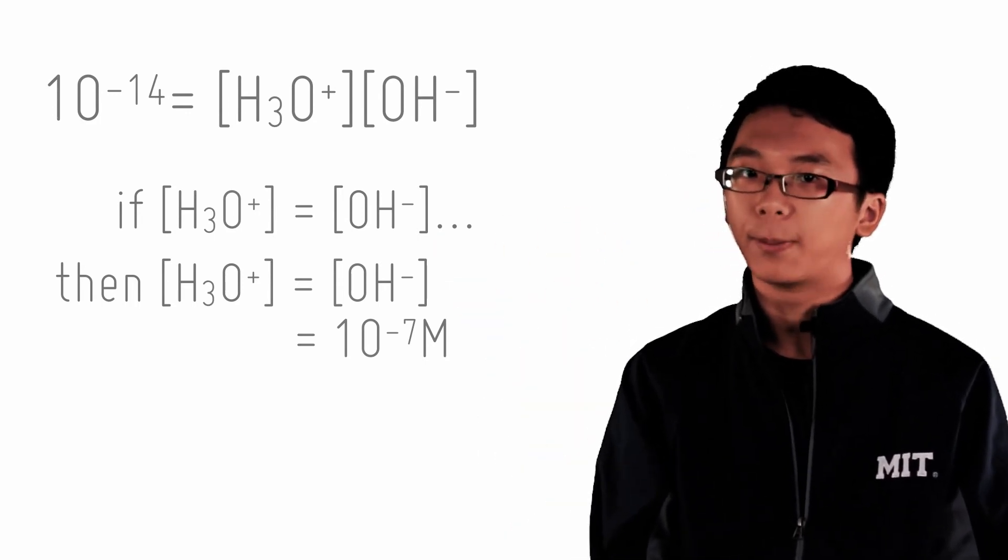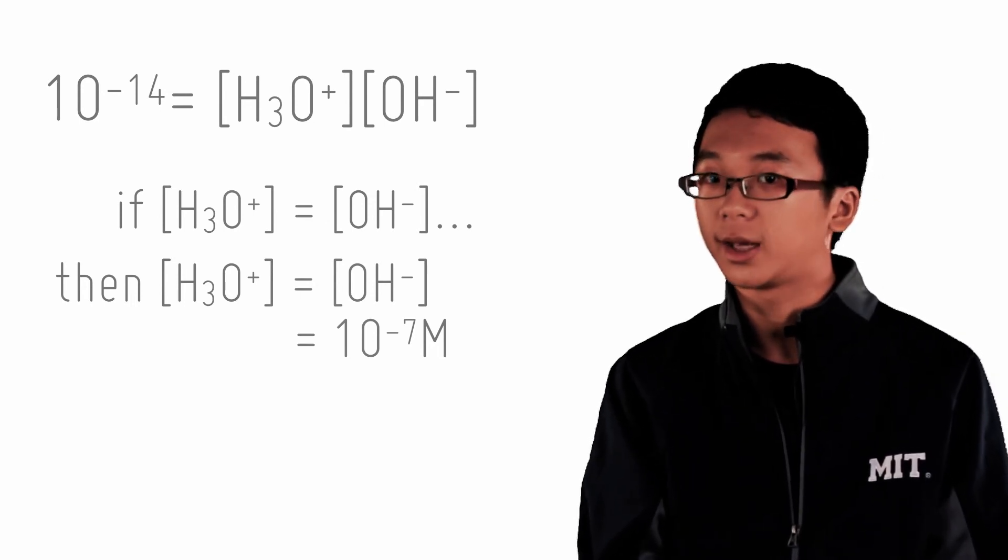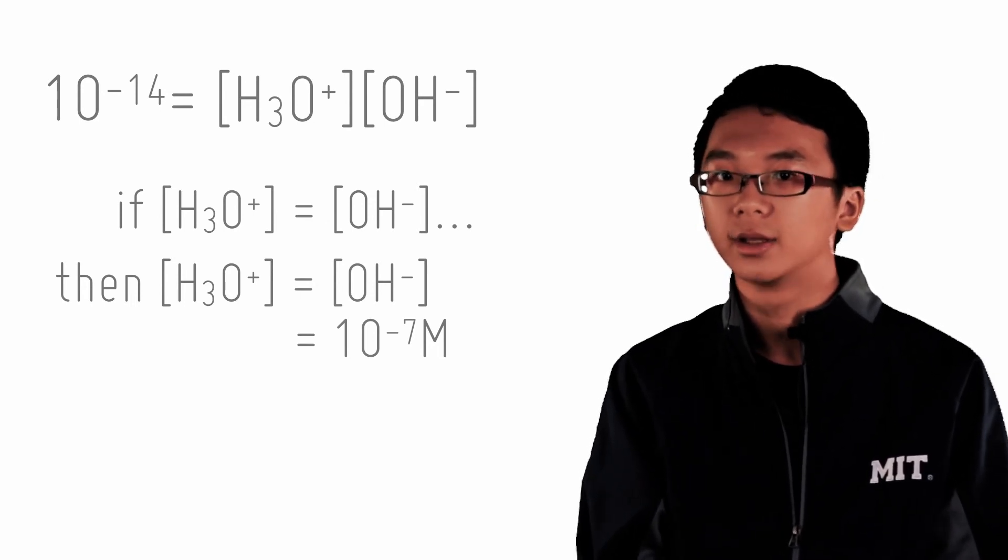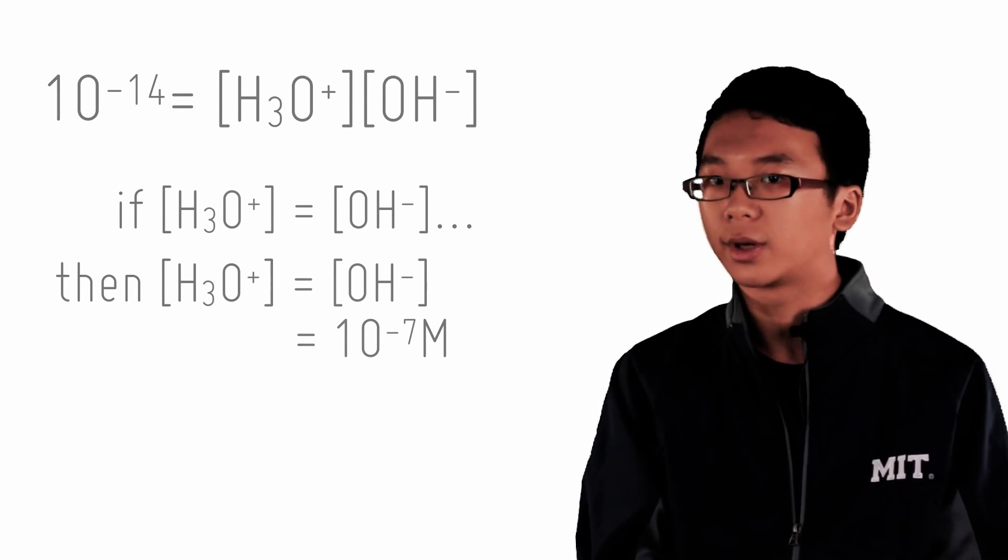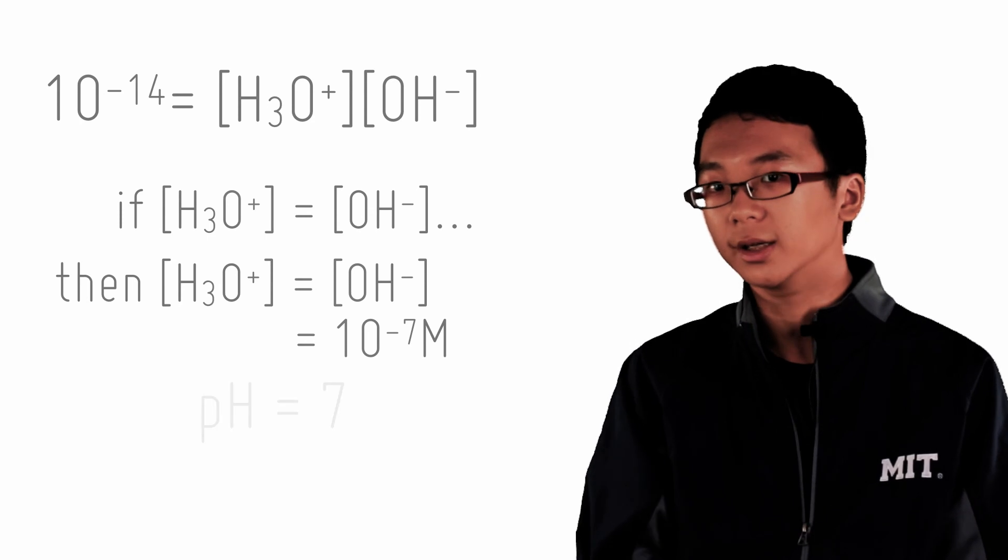In this case, that would mean that both hydronium and hydroxide will have to be in the concentration of 10 to the power of negative 7. So that when you multiply, you can get Kw. And that means that the pH of a neutral solution is 7.